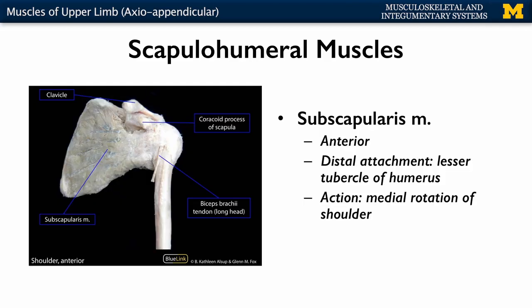If you flip to the other side, now we're looking at an anterior view. You have your subscapularis muscle, which is quite a large muscle, pretty much taking up the whole subscapular space. This is going to attach on the lesser tubercle of the humerus — it's the only muscle that attaches here, that's why the lesser tubercle is going to be smaller. As opposed to the infraspinatus and the teres minor, subscapularis is going to be a medial rotator of the shoulder.